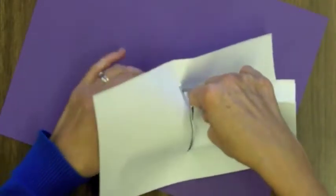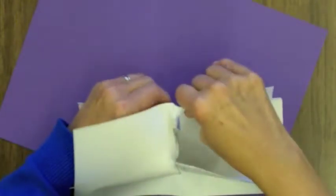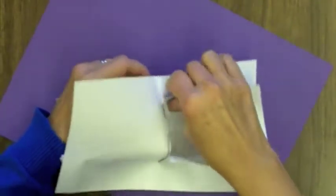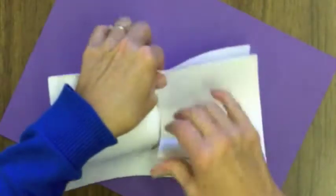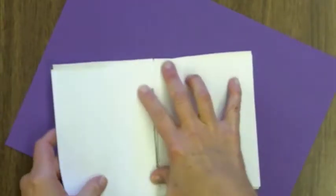Once you get it to where the slits match up, then very carefully unfold your paper. And what happens is that the slots will fit together. Now keep all the pages together like that. But you have to be really careful with that step.